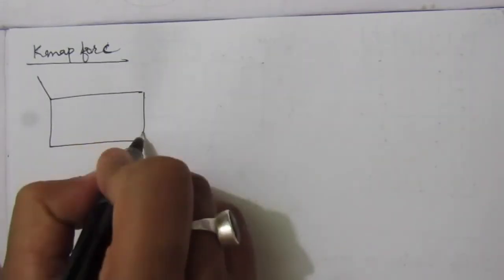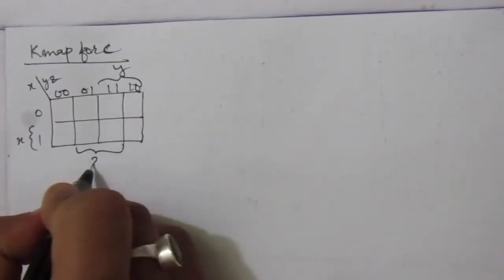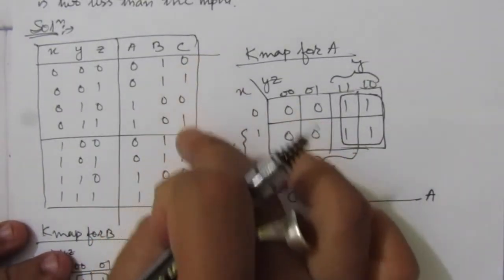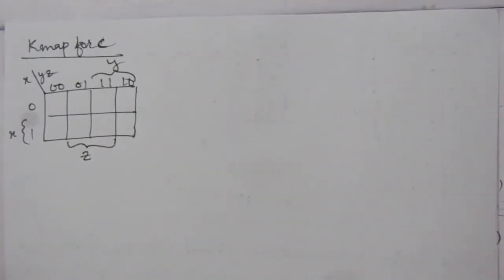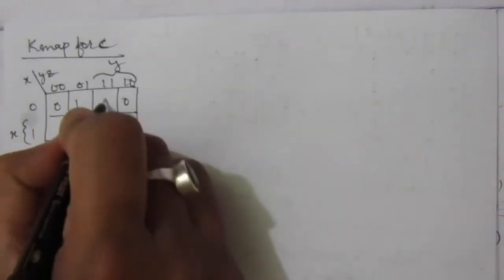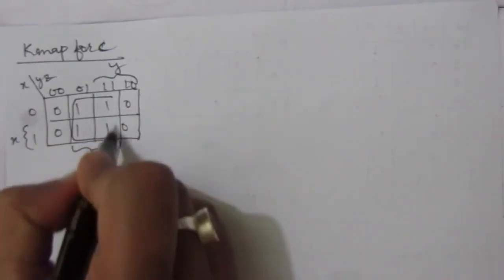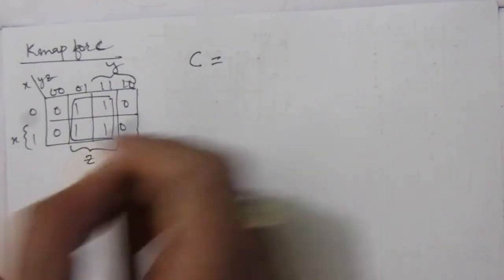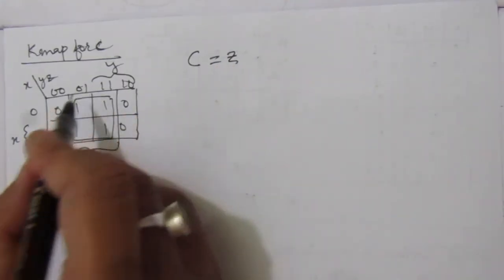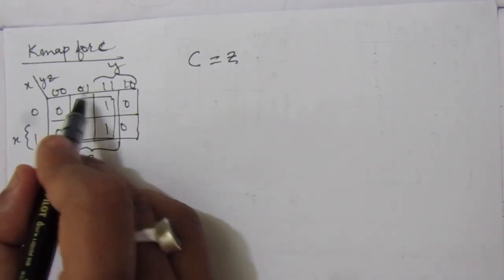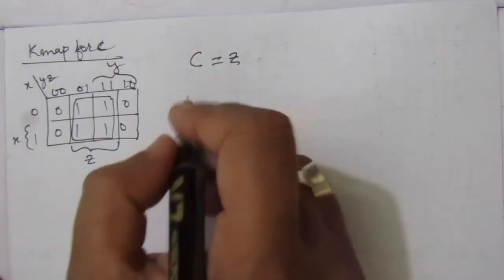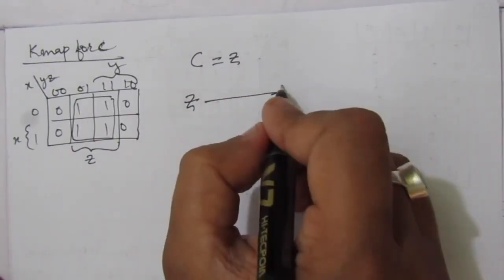Now for the K-map for C: we place the C values — 0, 1, 0, 1, 0, 1, 0, 1 — into the K-map. We can see that Z is 1 for alternating entries; Y and X cancel out because they take both 0 and 1 values. So we get C equal to Z. The circuit is a direct connection from input Z to output C.